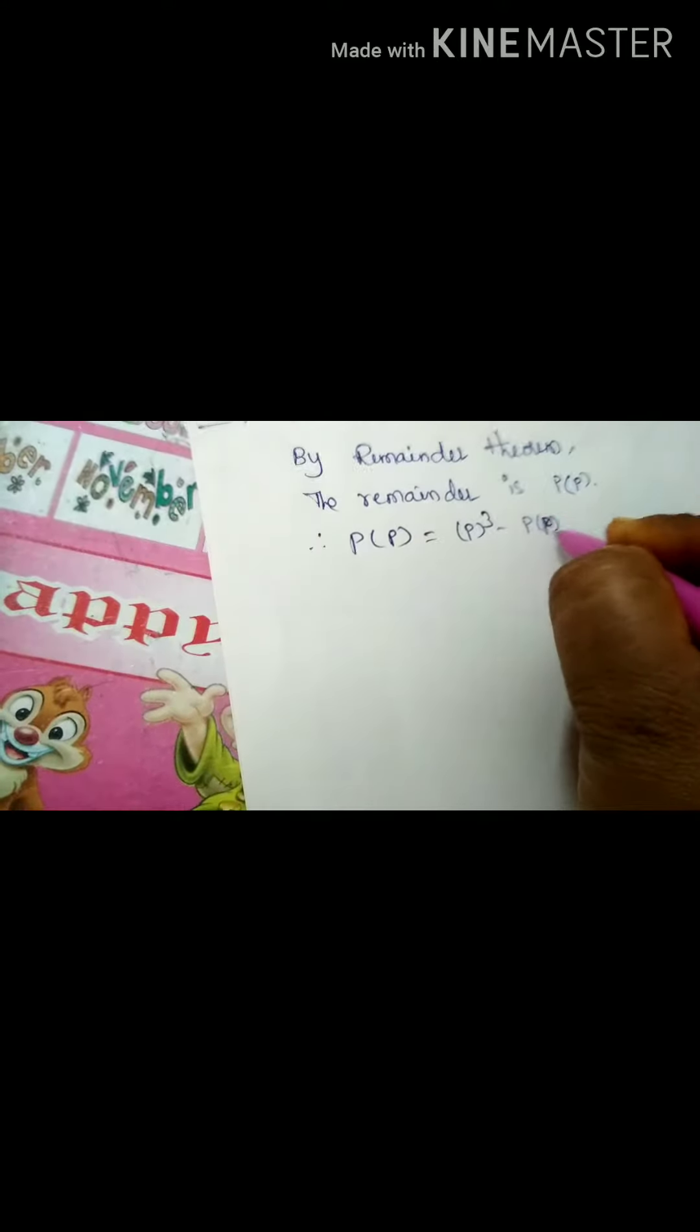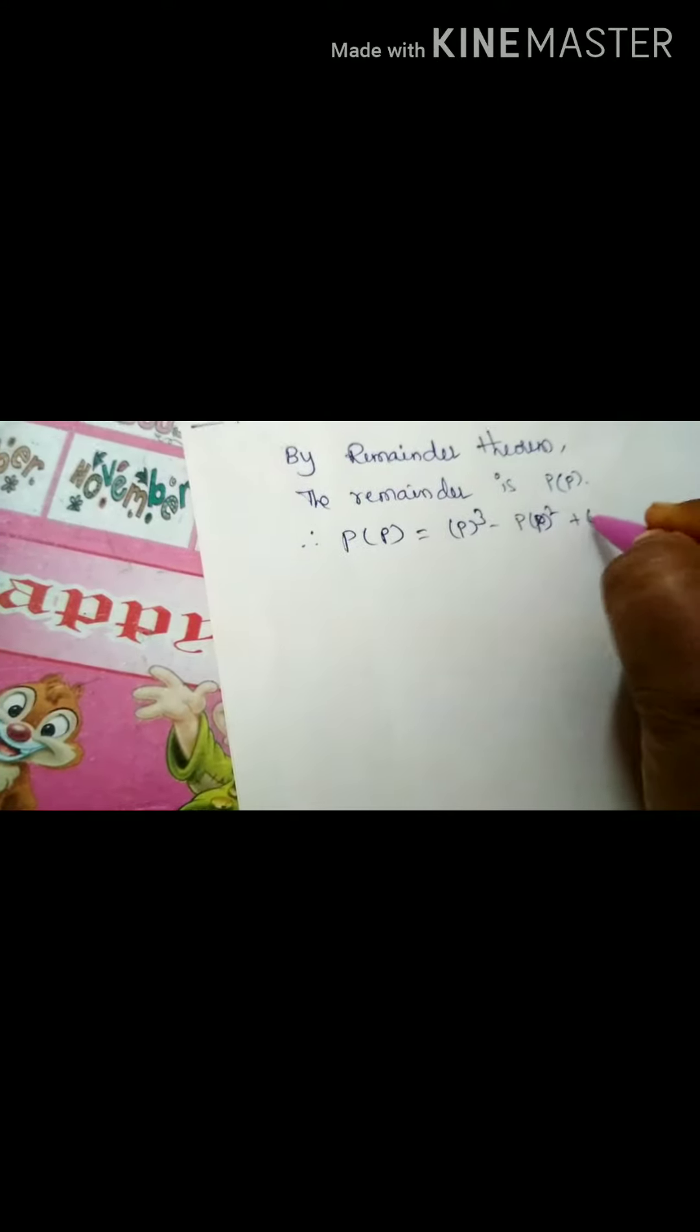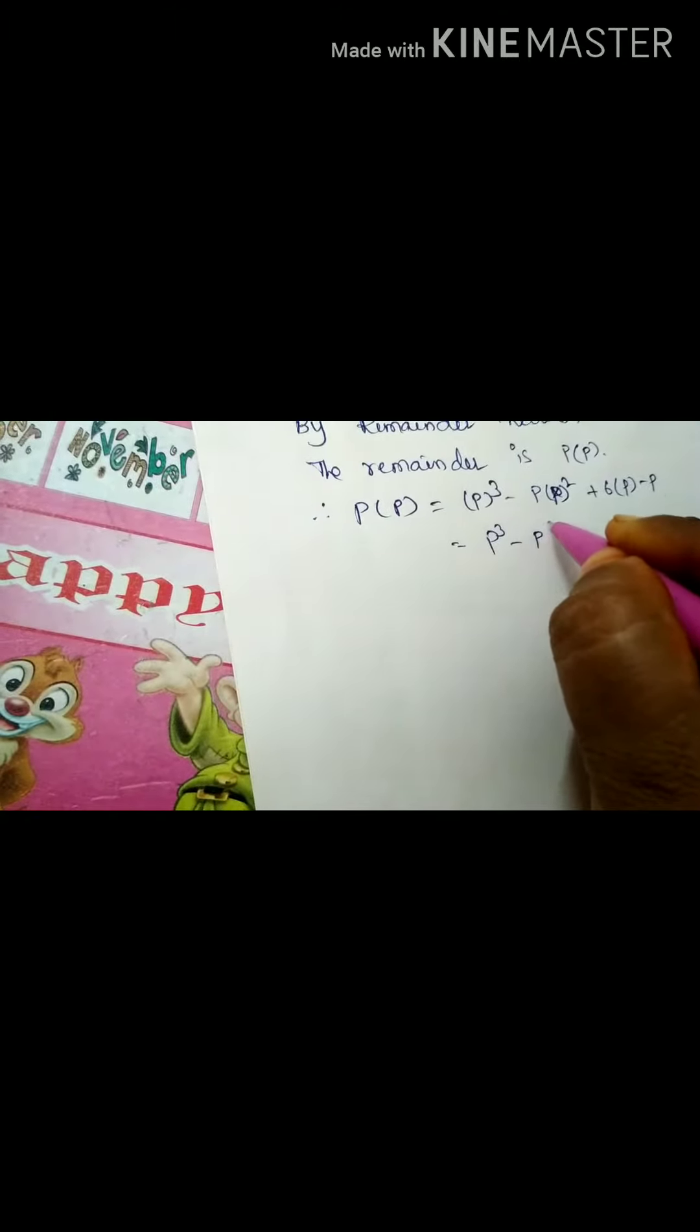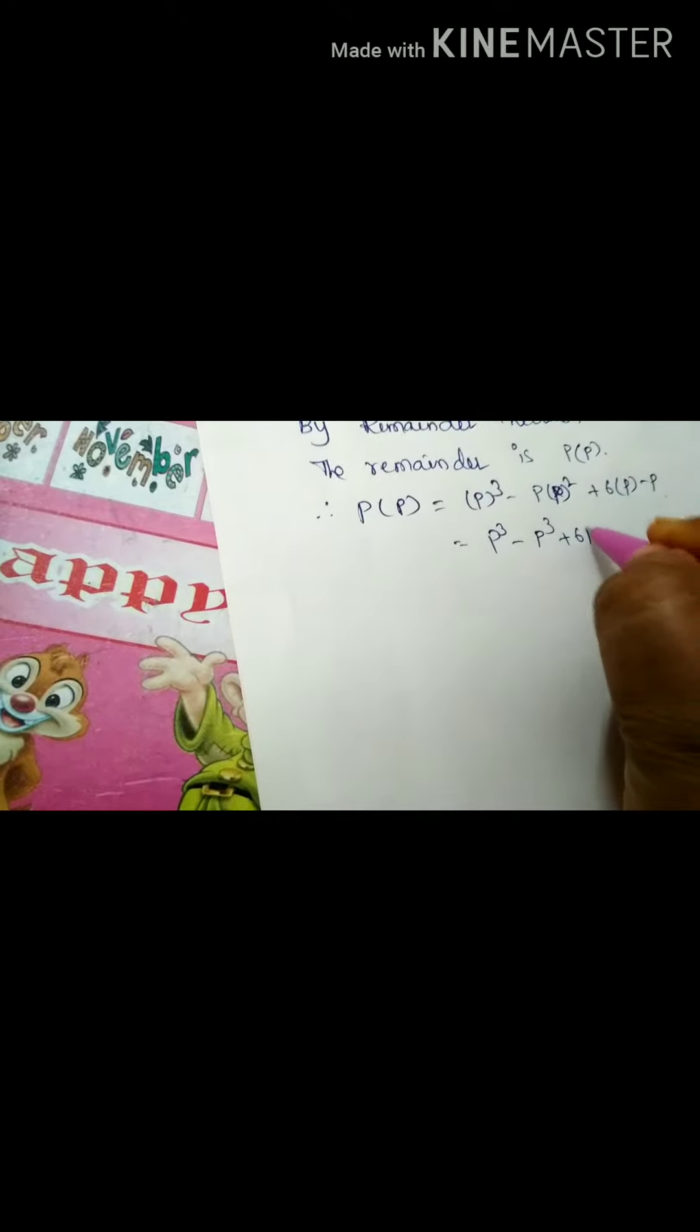p cube minus p into p square plus 6 into p minus p. p cube minus p into p square is also p cube plus 6 into p. 6p minus p.